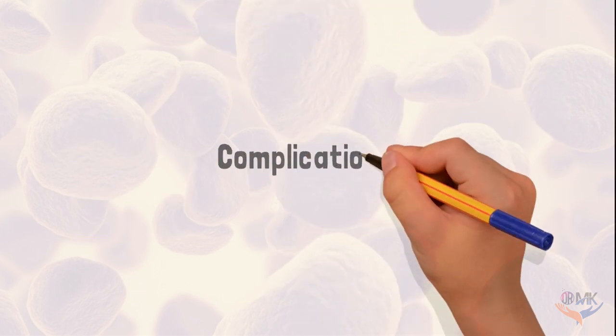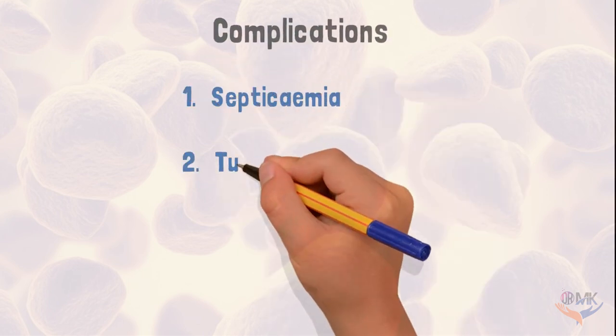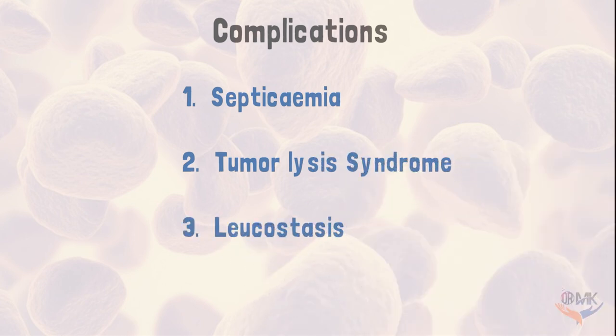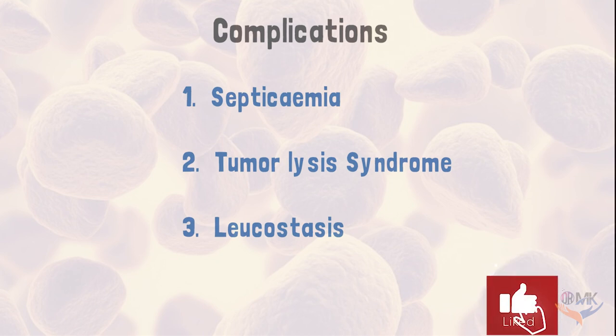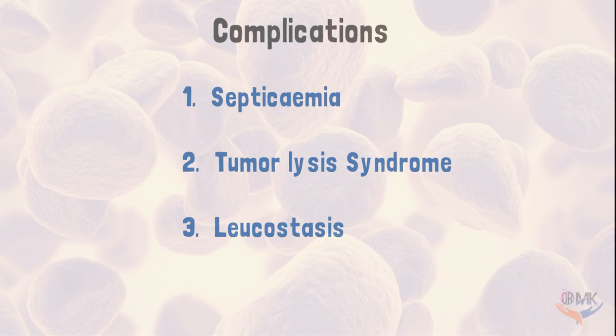The complications that can arise due to this disease are septicemia, which is blood poisoning caused by bacteria or their toxins. Tumor lysis syndrome occurs when large amounts of tumor cells are killed off, releasing their contents into the bloodstream, characterized by hyperkalemia, hyperphosphatemia, hypocalcemia, and hyperuricemia. Leukostasis is another complication in which leukemia cells accumulate and damage the microvasculature of vital organs.